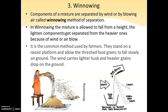Winnowing is a process of separation of grain from husk and hay with the help of wind. Winnowing itself means wind. What happens in winnowing is that the mixture is allowed to fall from a height, and the lighter components get separated from the heavier ones because of wind — lighter particles flow far away.